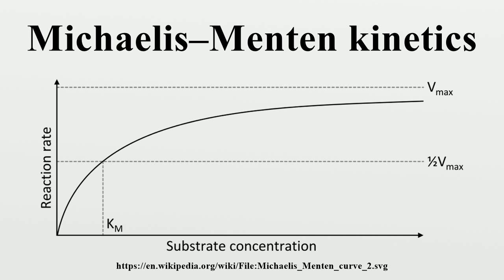The Michaelis constant is the substrate concentration at which the reaction rate is at half maximum, and is an inverse measure of the substrate's affinity for the enzyme — a small value indicates high affinity, meaning that the rate will approach maximum more quickly. The value of the Michaelis constant depends on both the enzyme and the substrate, as well as conditions such as temperature and pH.